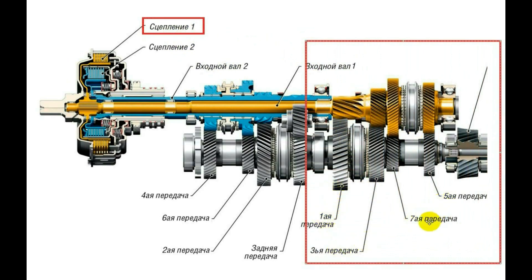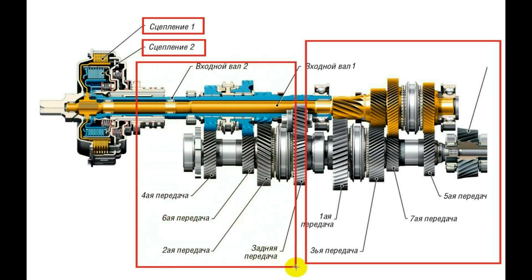Clutch number two can also be seen here. It is blue and has its own blue shaft, connected to the second part of the gearbox. This part of the gearbox is responsible for the second, fourth, and sixth gear—the even ones.